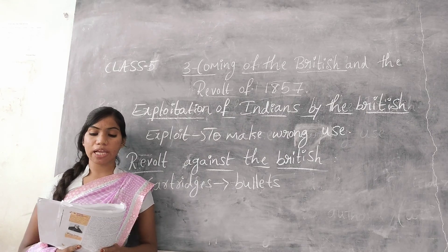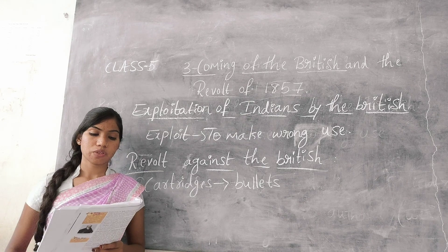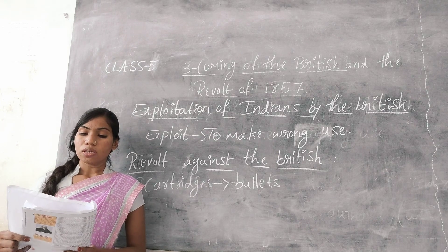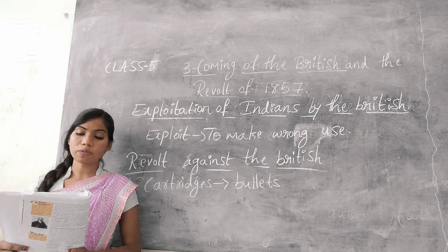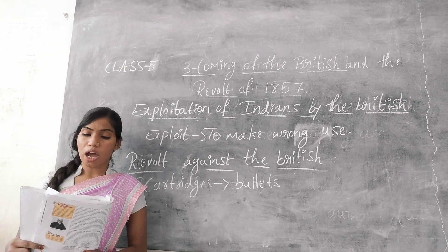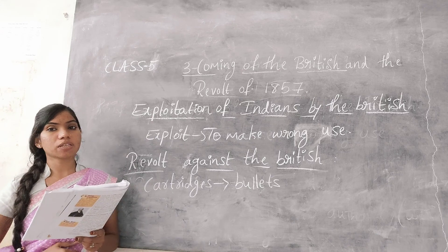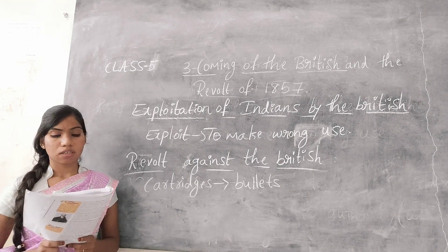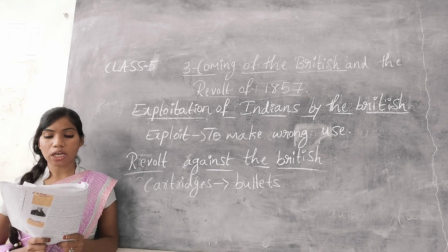The revolt of 1857, which began at Meerut, soon spread to northern and central India. It was joined by craftspersons and other sections of Indian society. Indian soldiers overthrew their superiors and marched to Delhi to crown Bahadur Shah Zafar.